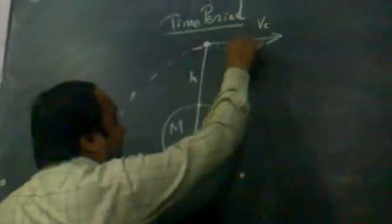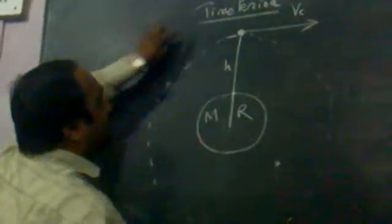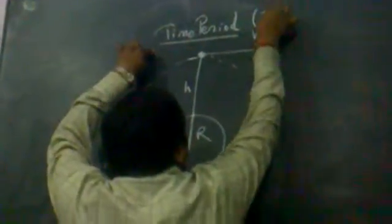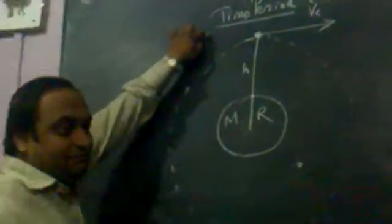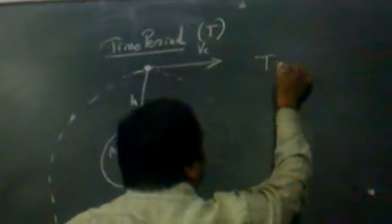The time taken by the satellite to complete one full circular path and reach back to its original location is called the time period, capital T, of the satellite. Our aim is to find an expression for the time period of the satellite.